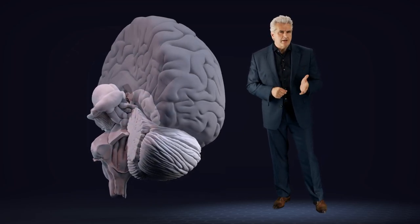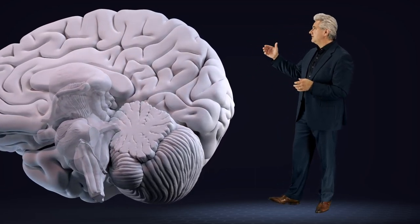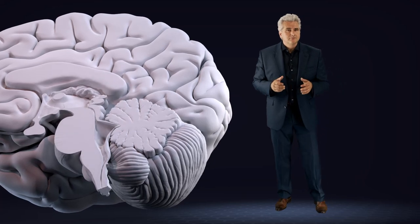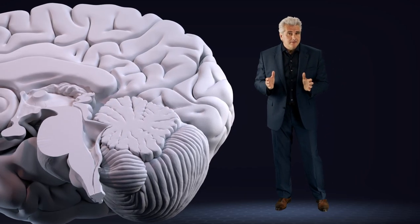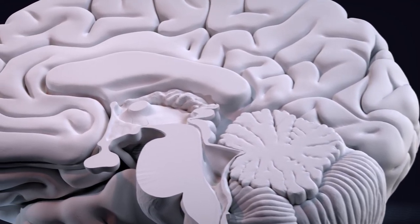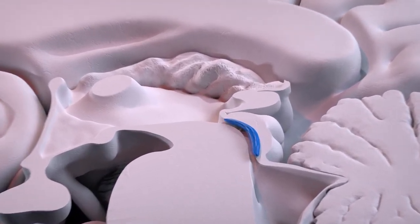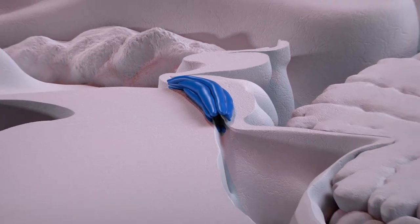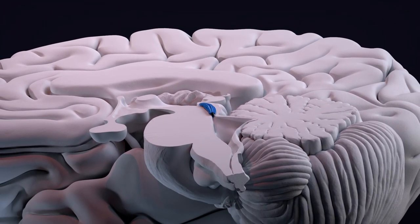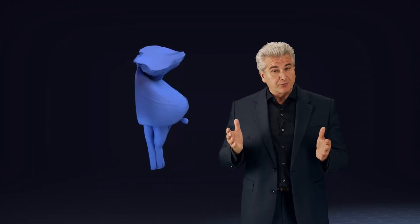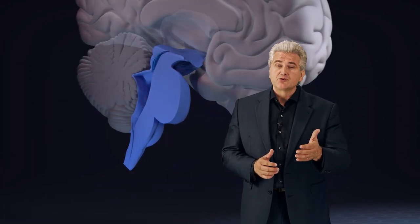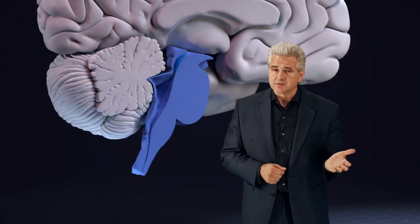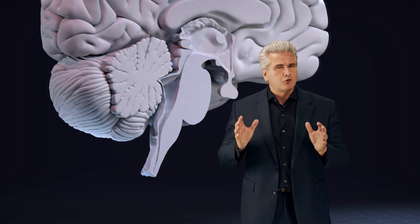Another brainstem area that serves autonomic regulation is the periaqueductal grey. It is placed in the midbrain and is involved in pain modulation, threat-triggered activation function, and defensive behavior when the threat is too strong. All this means that the brainstem controls life-supporting autonomic functions — far away from consciousness, survival is assured here.